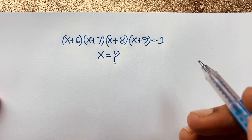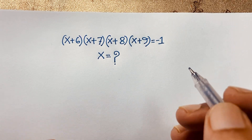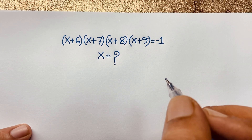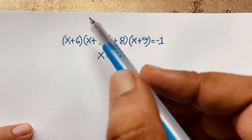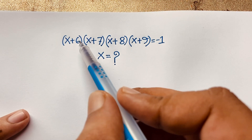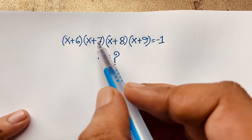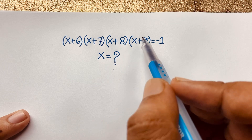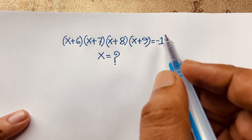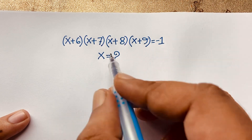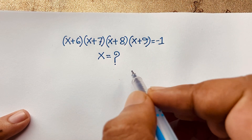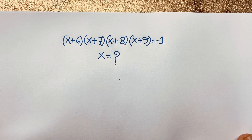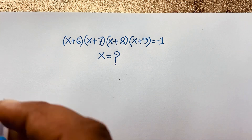Hello everyone, welcome to Russia's classroom. Today we have a nice math problem to solve: (x + 6)(x + 7)(x + 8)(x + 9) = -1. What is x equal to? Let's see how to solve this interesting math problem.